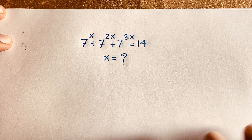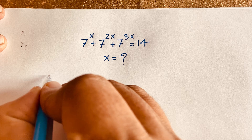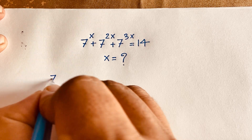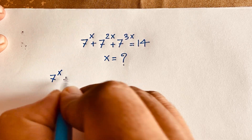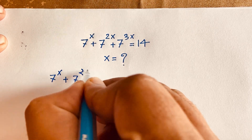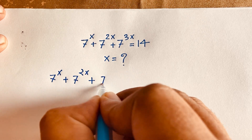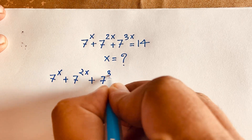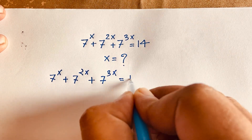So how to solve this question? Our equation is: 7 to the power x plus 7 to the power 2x plus 7 to the power 3x is equal to 14.